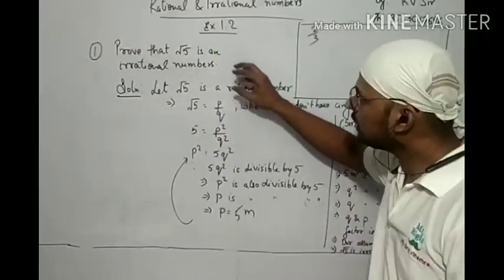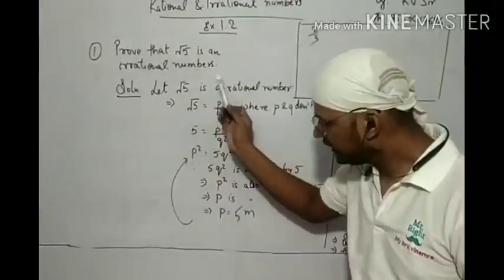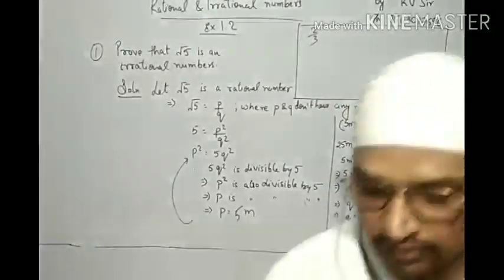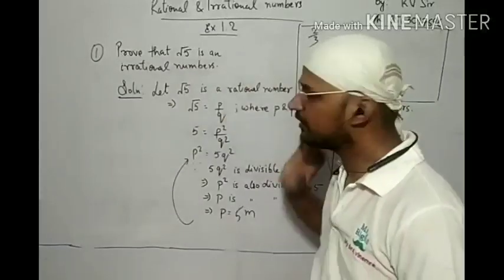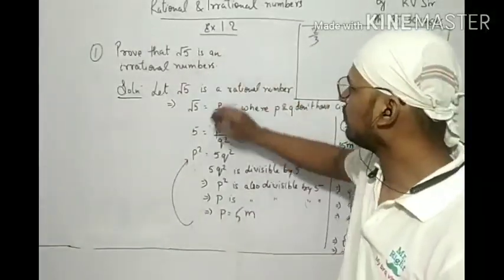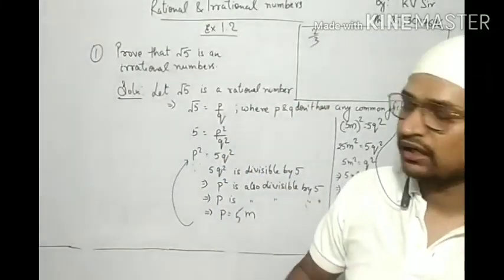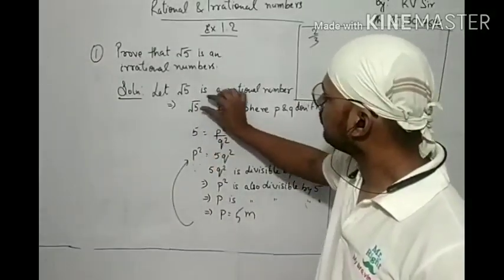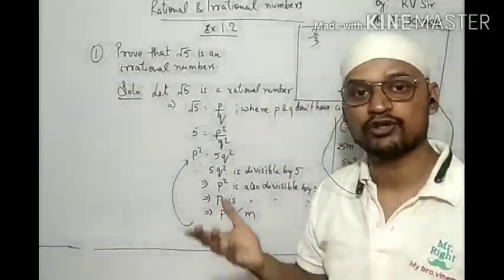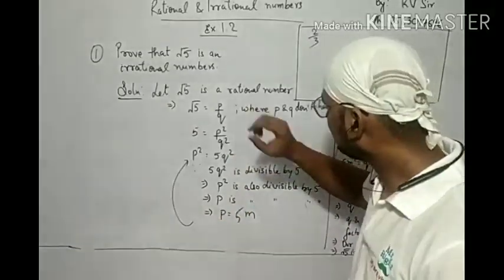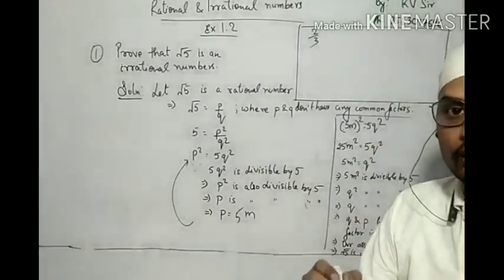Now we are going to prove that √5 is an irrational number. How will we prove it? Let root 5 be a rational number. If this is a rational number, it can be represented in p upon q form. The condition is that p and q don't have any common factors.